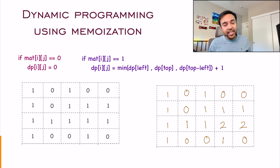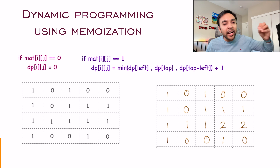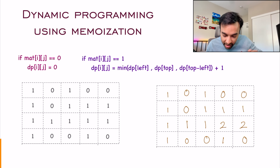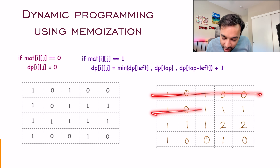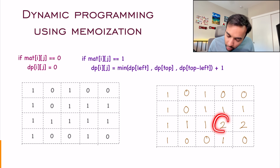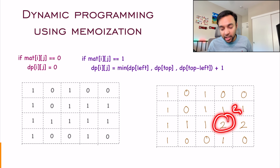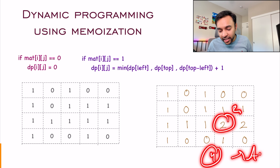The memoization array is now complete. You have found all of the maximum squares possible. To find the final answer, just iterate over all values, find the biggest value — that is your maximum side — and square it to get the area. So two times two equals four, and that is your answer.